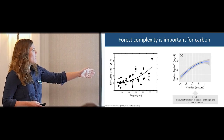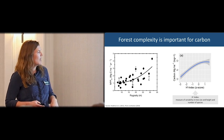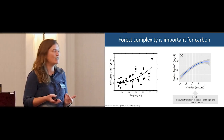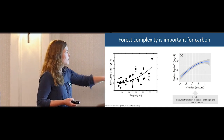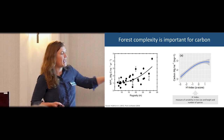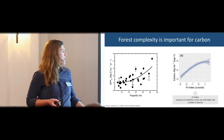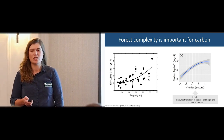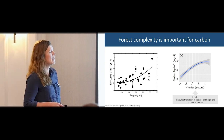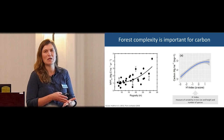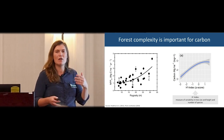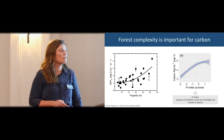Rugosity is a really important concept that will play into what Tony will discuss tomorrow with adaptation and resilience. Each of these three letters represents different plots with very similar leaf area indexes but different rugosities, and therefore different net primary production outcomes. Research across all FIA plots shows that measures of complexity — tree size, height, and number of species — are really important for carbon, and we can think about manipulating this to increase carbon benefits.